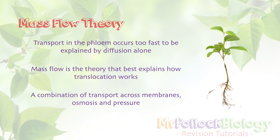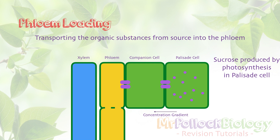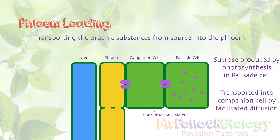We can break this whole process into three main stages. The first stage is about getting stuff into the phloem. Because palisade cells are doing loads of photosynthesis, there's an awful lot of sucrose being produced. This creates a concentration gradient between the palisade cells and the companion cells of the phloem sieve tube elements. Because of this concentration gradient, we can transport the sucrose by facilitated diffusion — using a channel protein — since sucrose is too large to pass directly through the lipid bilayer.